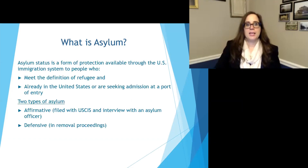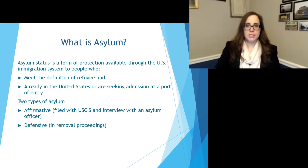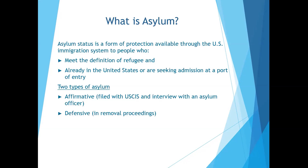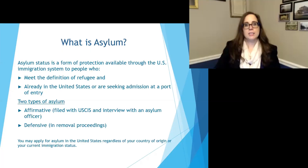Asylum is a form of relief in our immigration system that is to protect people who are in the United States but meet the definition of a refugee. We have another webinar about refugee status — that's for people who are similarly situated but outside the United States. There are two types of asylum: affirmative asylum and defensive asylum.